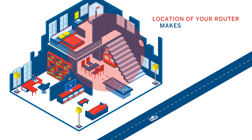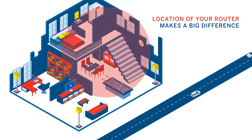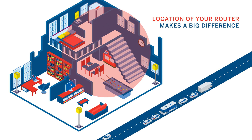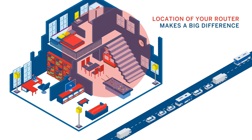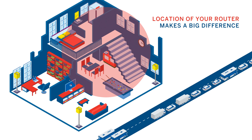The location of your router makes a big difference when it comes to internet speed. Objects such as walls, windows, or mirrors can all impact the quality of your connection. Think of these like lane closures or hazards on the highway — the more obstacles between your router and your devices, the more issues you might experience.